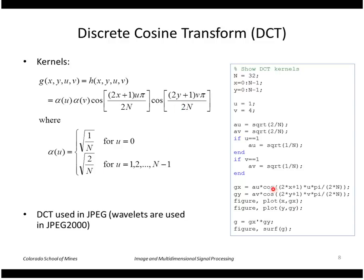I'm going to calculate the cosine in the x direction, the cosine in the y direction, plot those, and then take the product to give me my function g and show that as a surface.